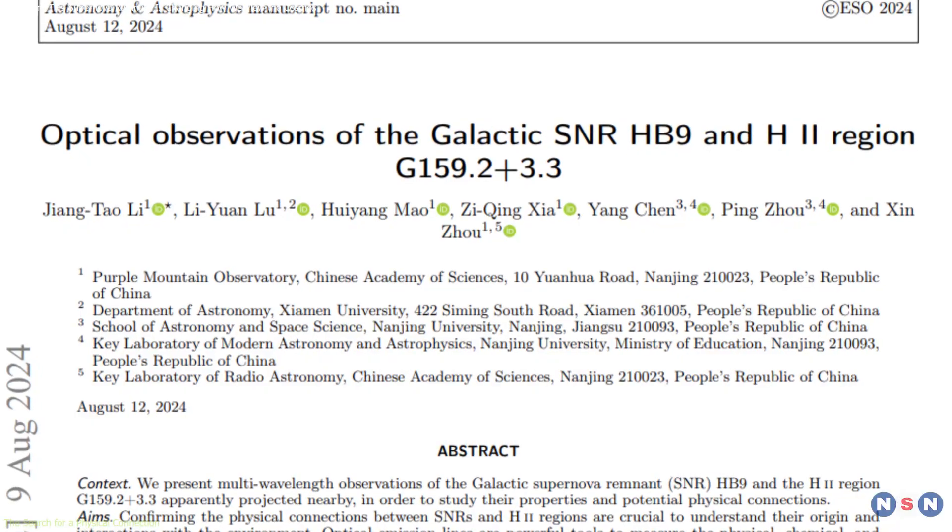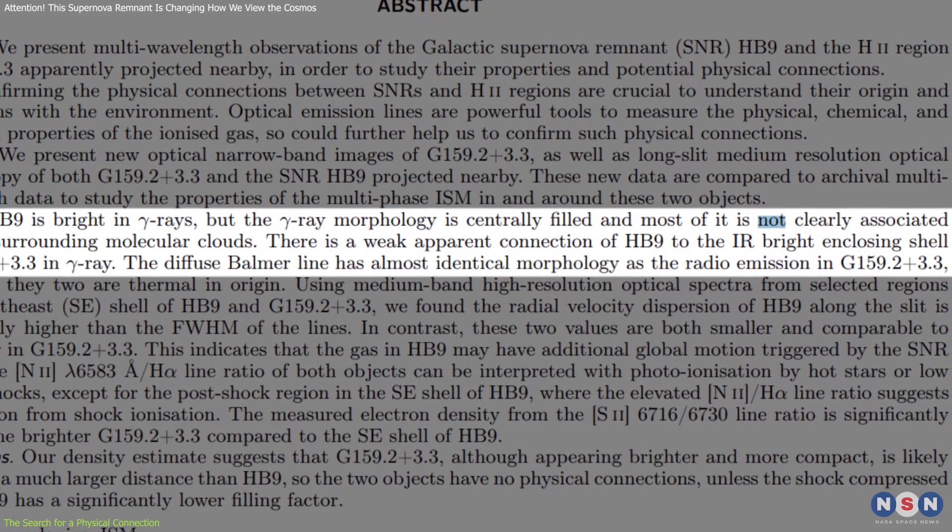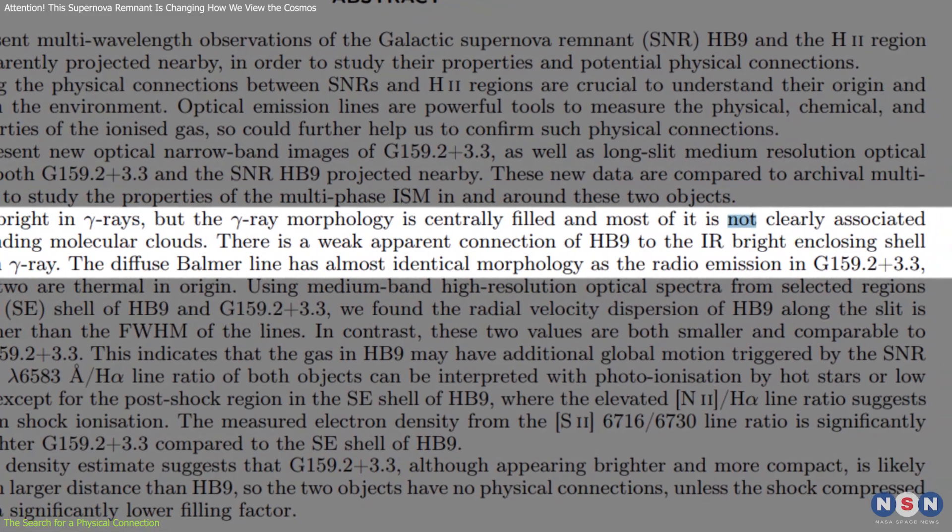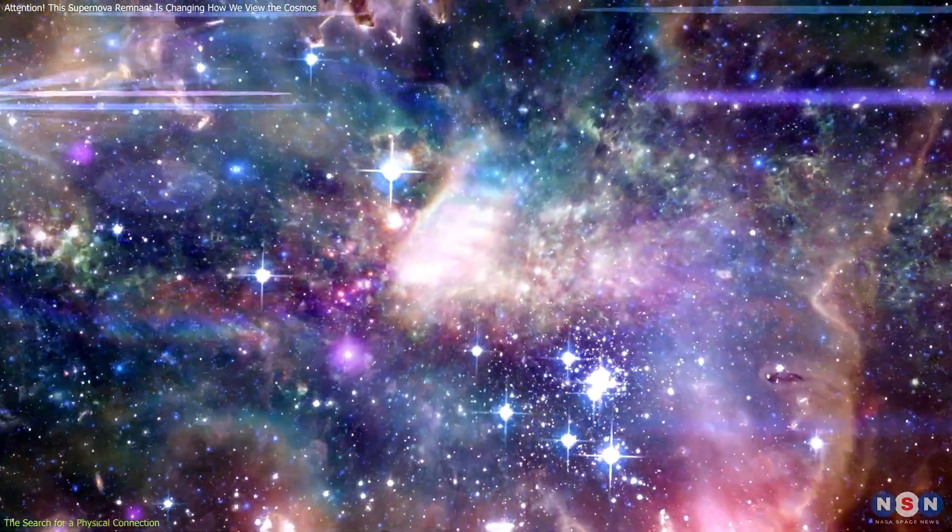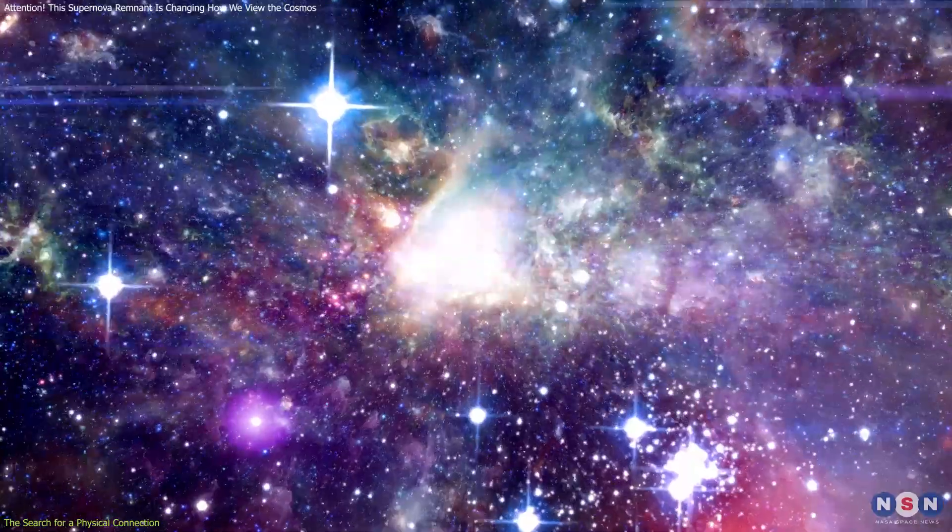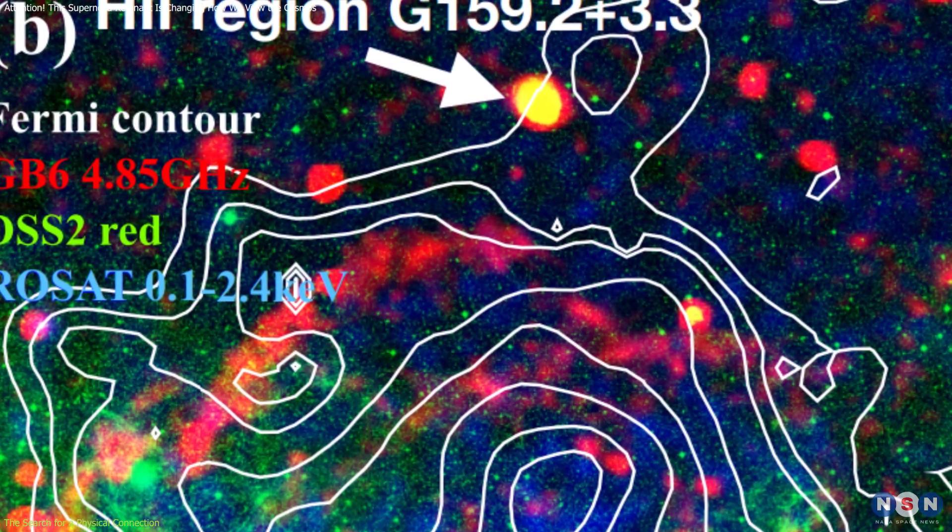Despite these intriguing findings, the researchers ultimately concluded that Hb9 and this H2 region are not physically connected. Their density suggested that the H2 is located at a much greater distance than Hb9, meaning the two objects are only close in appearance, not in space.